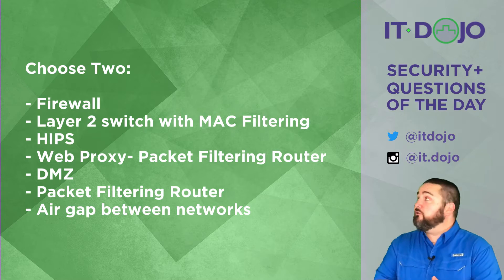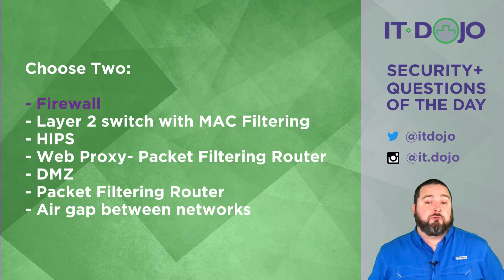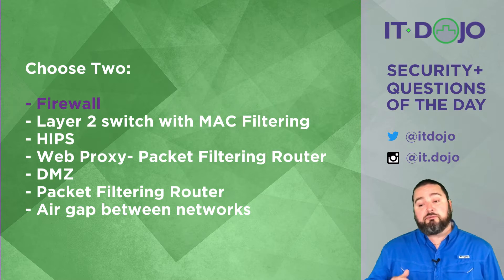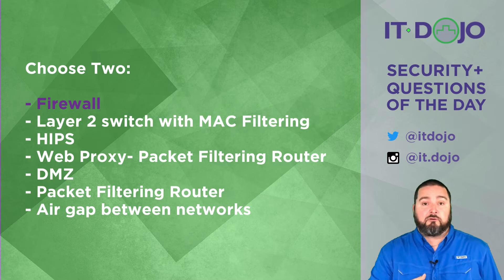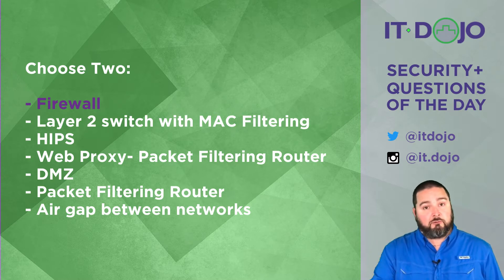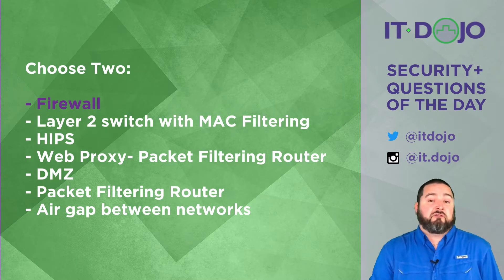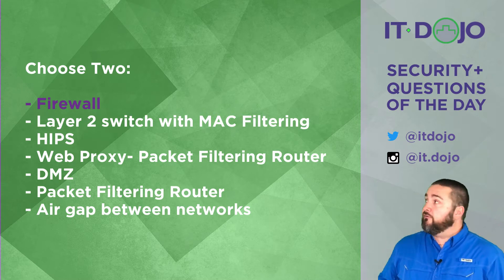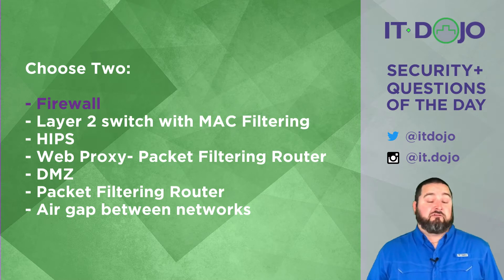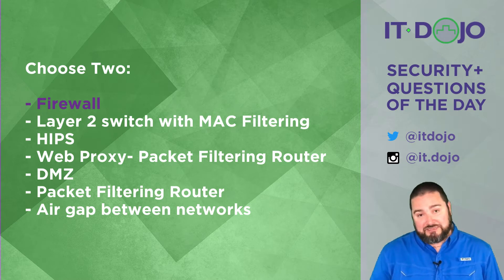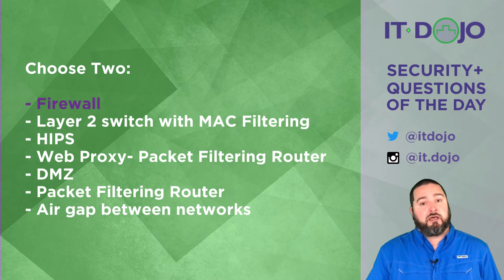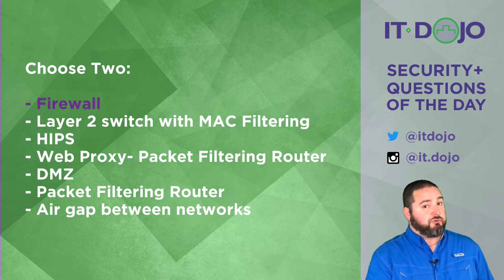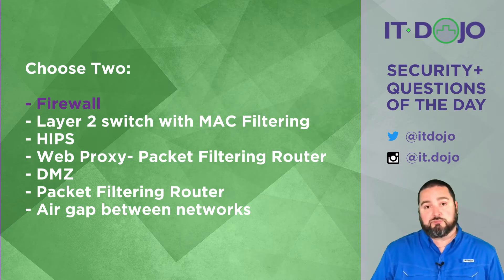The first choice on the list is one of the right answers: a firewall. A firewall will absolutely do this. You could place a firewall between these servers processing sensitive information and the rest of your network, then create rule sets that define the conditions under which data is allowed to flow. The default rule with a firewall is that no data flows, so you explicitly create rules specifying which ports and protocols are allowed from a given source to a given destination.